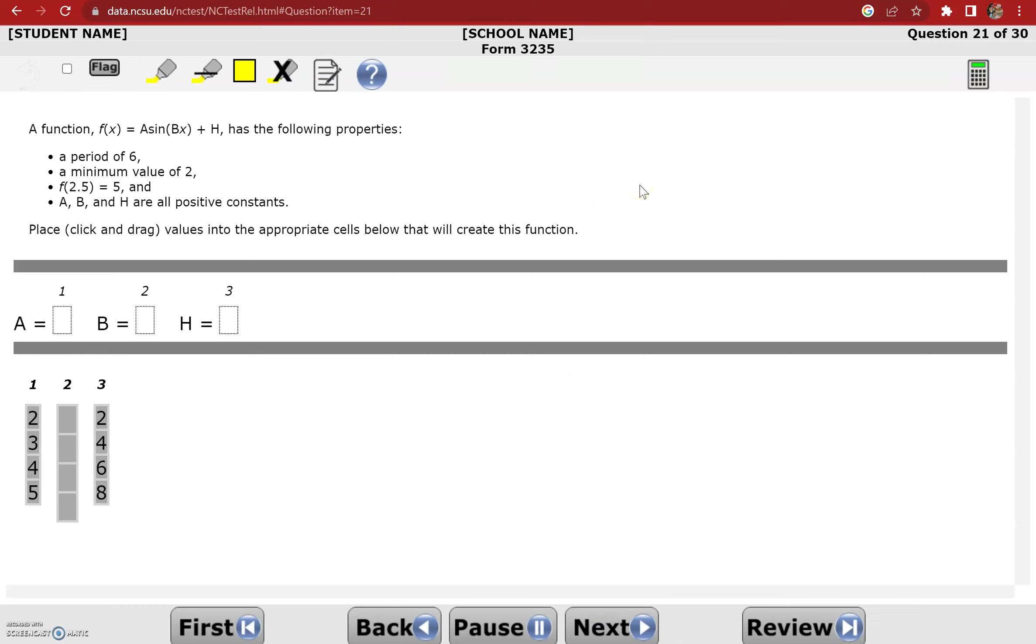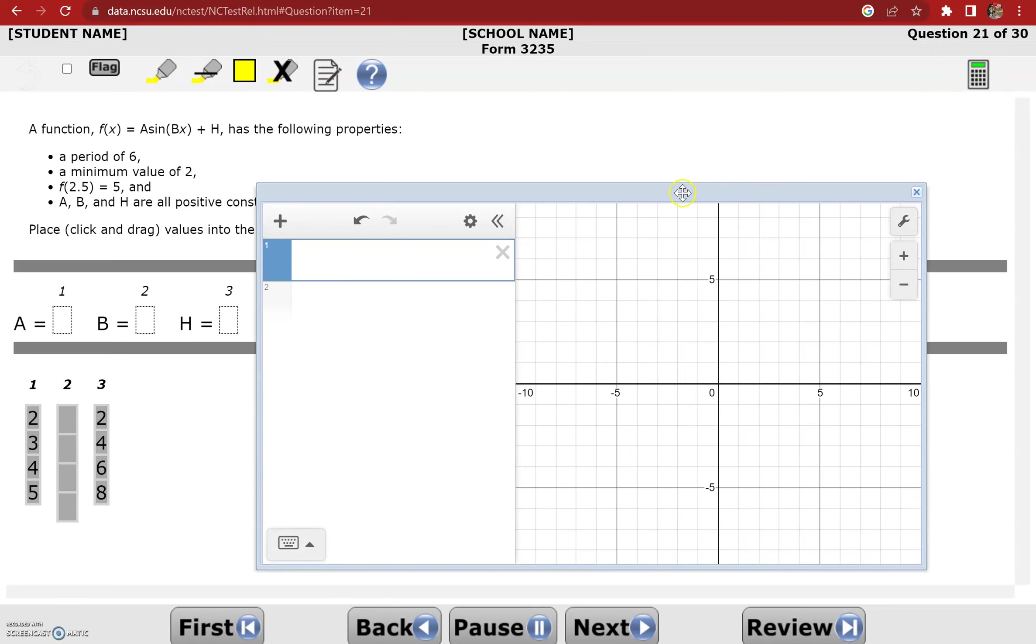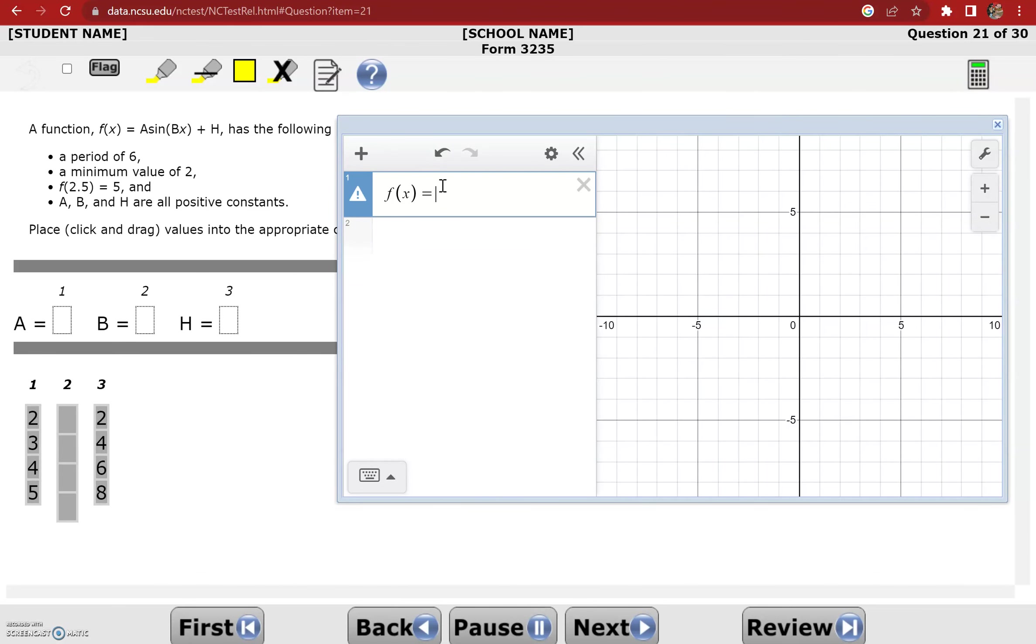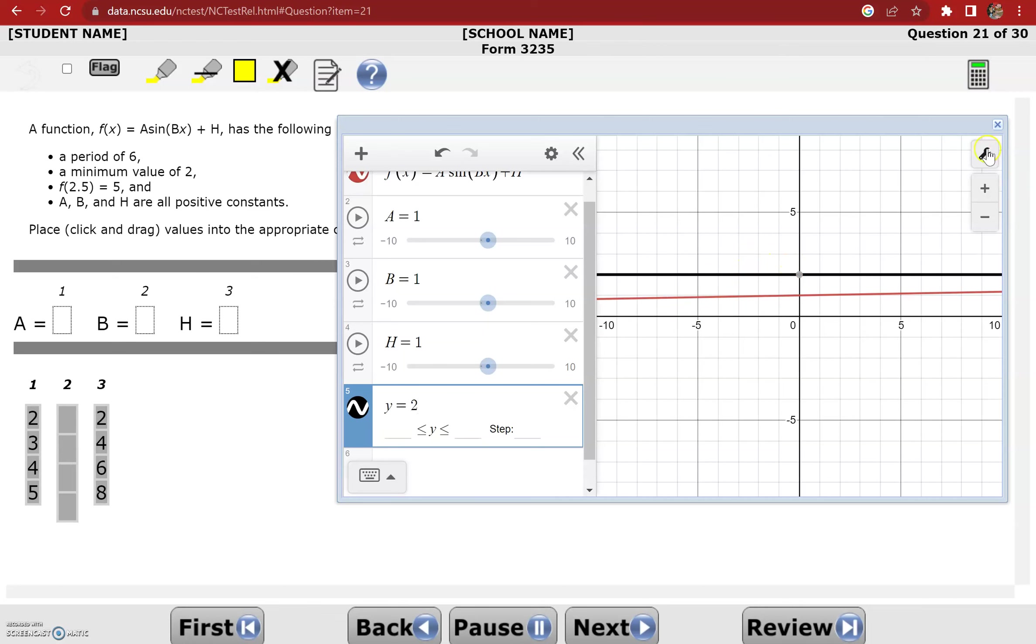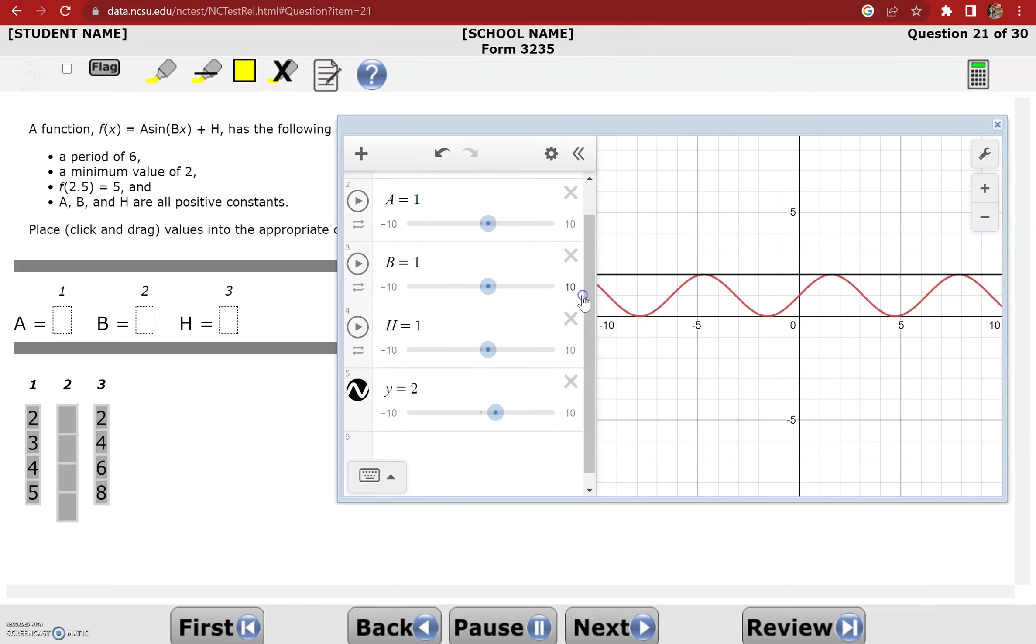A function f of x equals a sine bx plus h has the following properties: period of 6, minimum value of 2, the point f of 2.5 equals 5, and a, b, and h are all positive constants. So again, anytime we have a function with constants inside it, we can use Desmos to add sliders to represent those constants. So in this case, I have a list of options. And these options are lagging out. They only show up if I click on them. But it's pi over 2, pi over 3, pi over 4, and pi over 6. So there's some things I need this graph to have. It needs to have a minimum value of 2. So I'm going to go ahead and graph the line y equals 2 because I need the graph to hit there at the slowest. I need to put it in radian mode so that it shows up the right way. Sine and cosine functions must be graphed in radian mode.